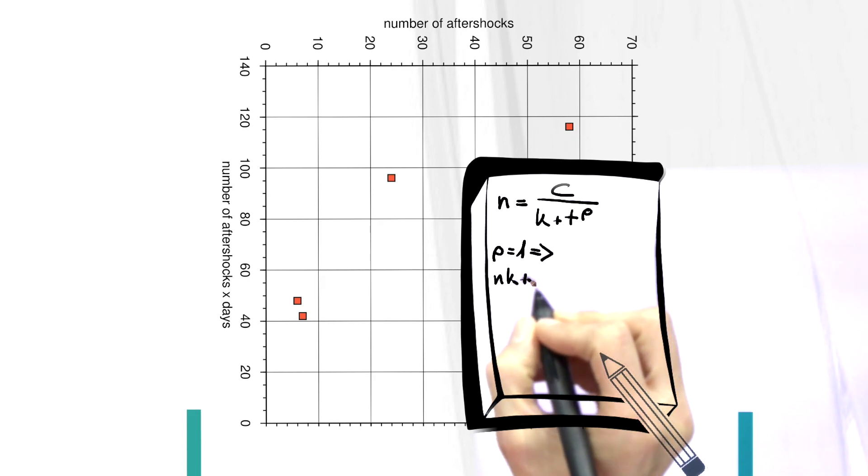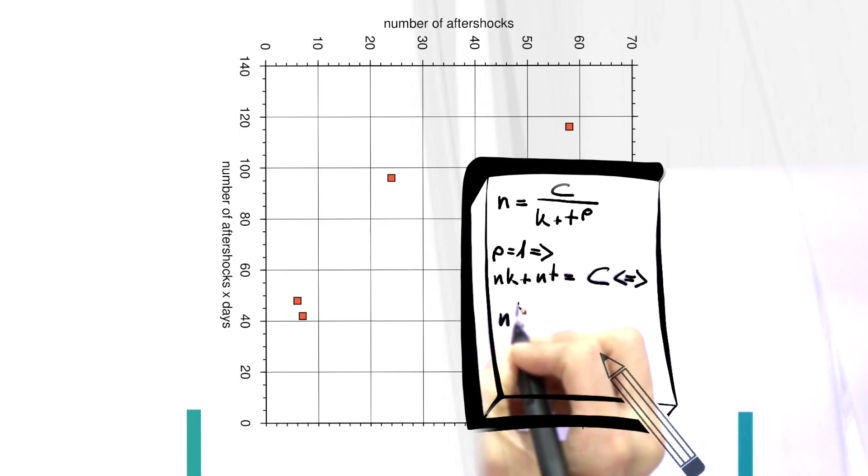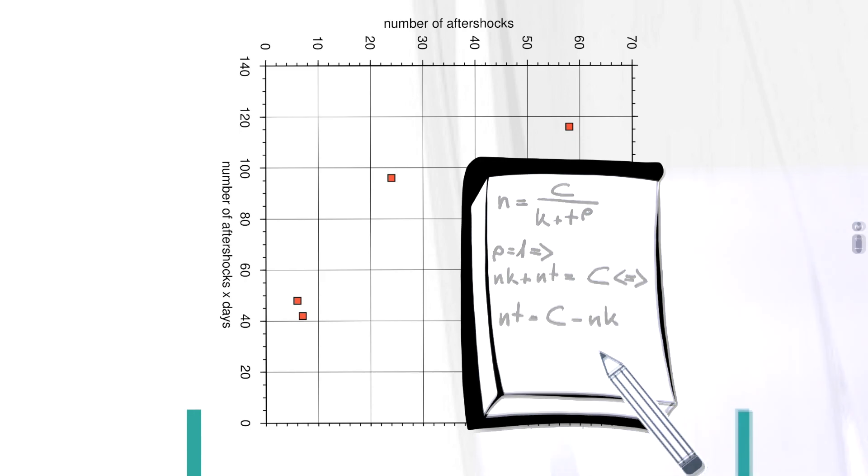We now multiply by k plus t and obtain nk plus nt equals c. Rearranging the equation gives nt equals c minus nk.